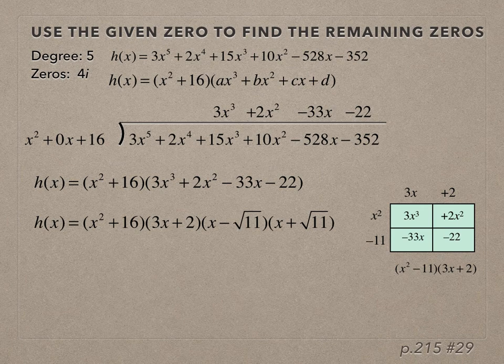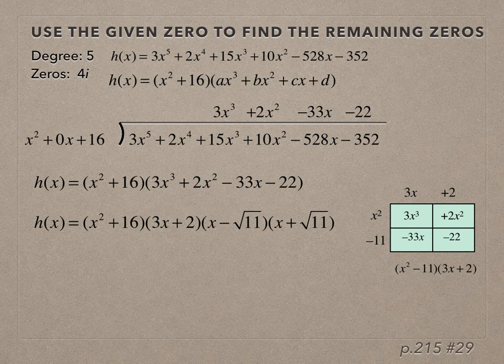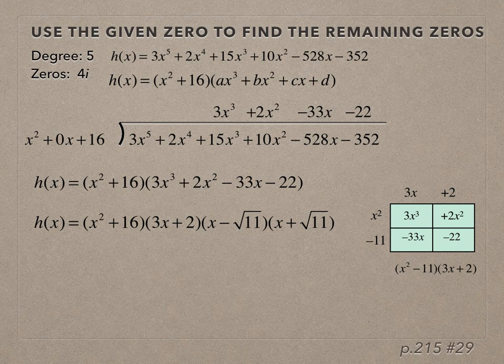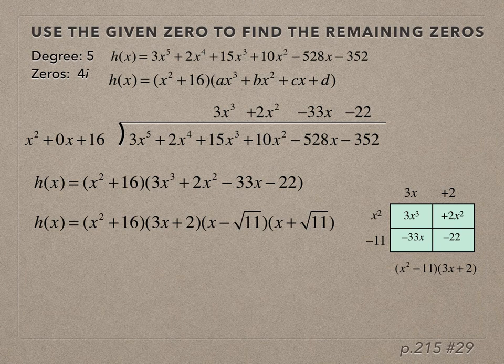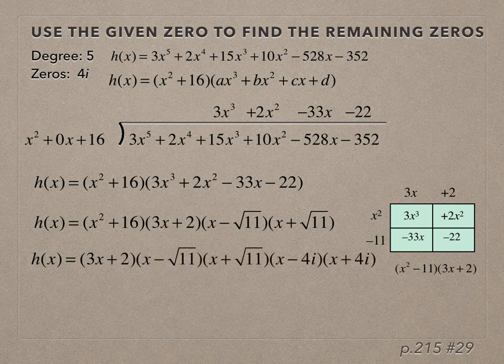x² - 11 can be factored using difference of perfect squares with √11. So we've taken the original h(x), used one of the zeros, performed polynomial long division, factored by grouping, and kept rewriting in factored form. Now we break down x² + 16 into (x - 4i)(x + 4i). At this point, we can figure out all the zeros.